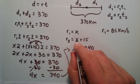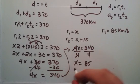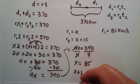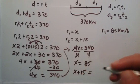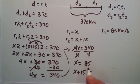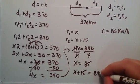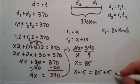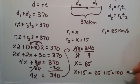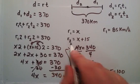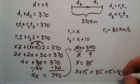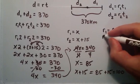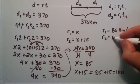r2 equals x plus 15. We just found that x equals 85, so 85 plus 15 equals 100. The rate that car 2 is traveling at is equal to 100 kilometers per hour.